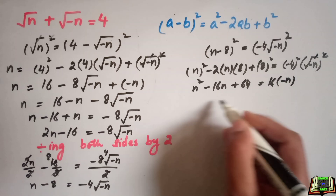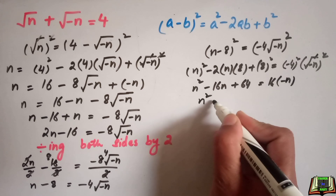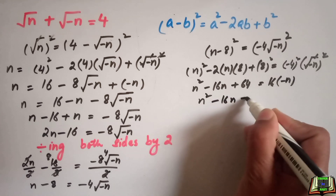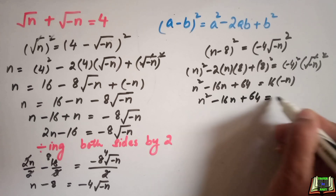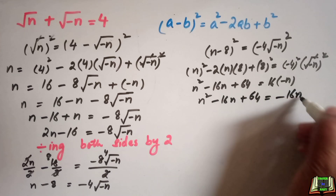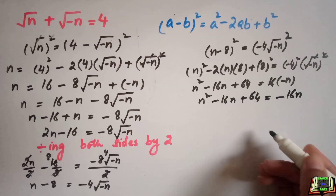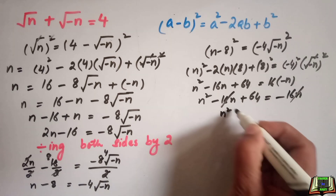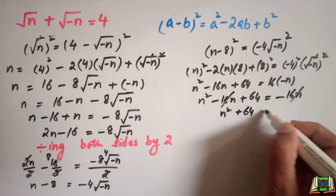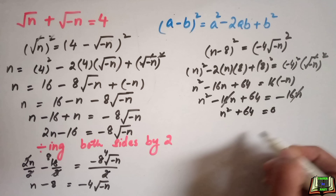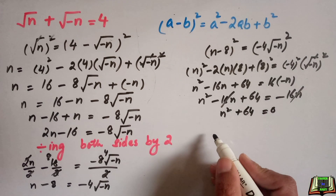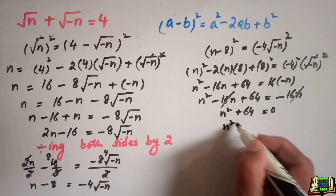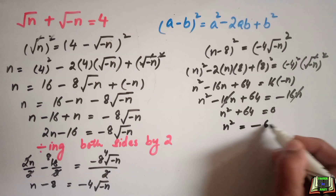So we write it as n squared minus 16n plus 64 equals minus 16n. We can see that the minus 16n on both sides cancel out, and we are left with n squared plus 64 equals 0. Subtracting 64 on both sides, we get n squared equals minus 64.